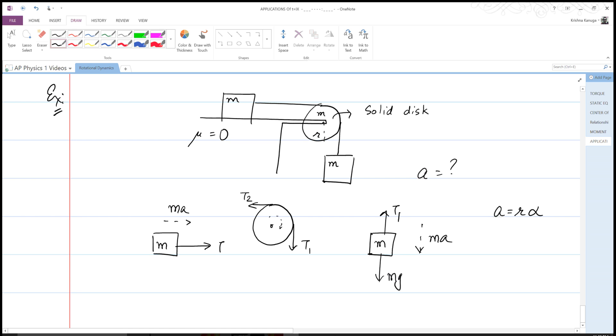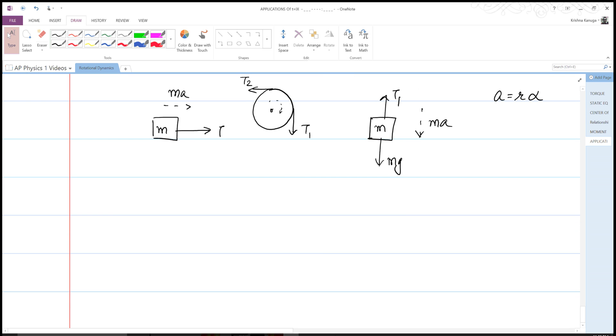So at this point, let's start writing our equations. I get mg minus T1 is equal to ma. I have T1 minus T2 times little r is equal to I alpha.